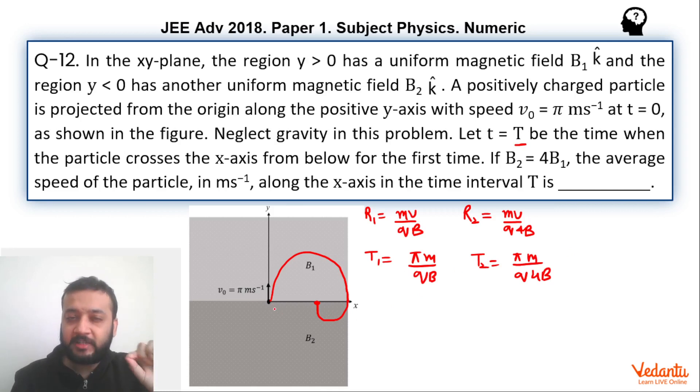Now the catch is you have to find the average speed along the x-axis. So there can be two interpretations. Along the x-axis particle is going like this and it comes back. One way of interpreting is that 2r1 plus 2r2, this is total distance. So one way can be 2r1 plus 2r2 divided by t1 plus t2. If you put all these values, you are going to get 2. This will become 2.